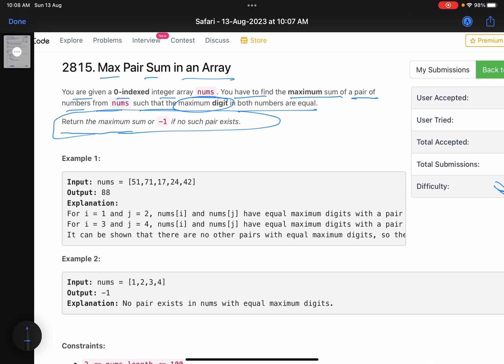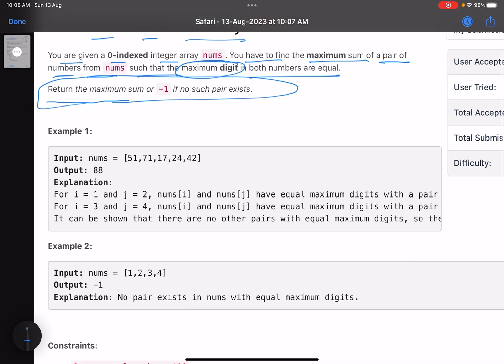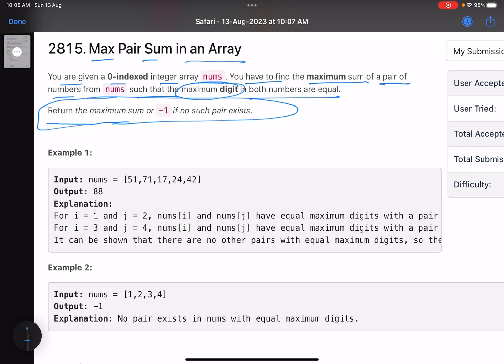For example, I have to find the maximum sum of pairs—so choose two numbers which give you the maximum sum. But you can only choose two numbers if the maximum digit in both the numbers are same. Like for example: